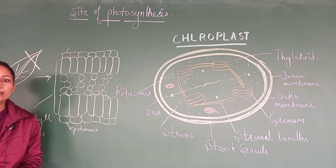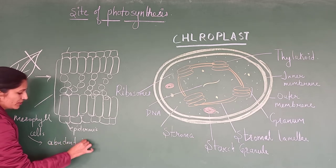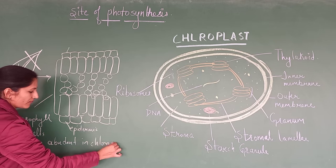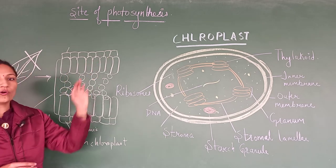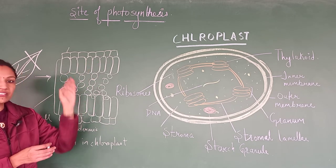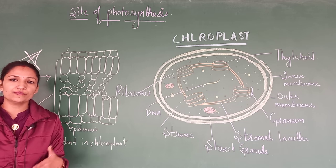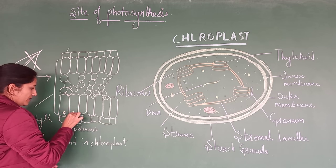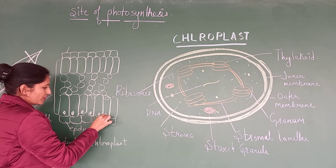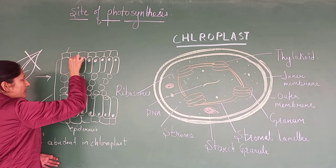These mesophyll cells are abundant in chloroplast, meaning they contain a greater number of chloroplasts. In these cells, chloroplasts arrange themselves at the wall or at the side of the cells so that a maximum amount of sunlight can be trapped for the process of photosynthesis. These are the green colour plastids which we call chloroplast. Now we are going to talk about the structure of chloroplast in detail.